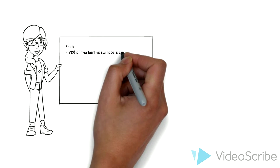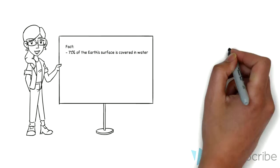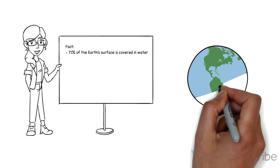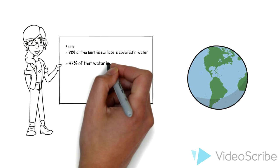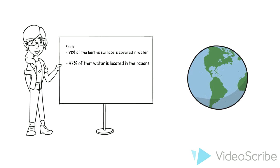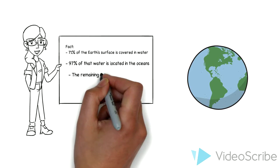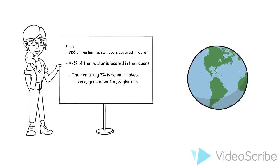71% of all of the Earth's surface is covered in water. 97% of that water is located in the oceans alone, while the remaining 3% is found in lakes, rivers, groundwater and glaciers.